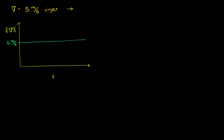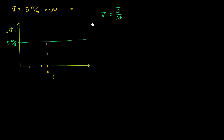My question to you is: how far does this thing travel after 5 seconds? So after 5 seconds — 1, 2, 3, 4, 5 seconds right over here — how far did this thing travel? We could think about it two ways. We know that velocity is equal to displacement over change in time, and displacement is just change in position over change in time. Or another way to think about it, if you multiply both sides by change in time, you get velocity times change in time is equal to displacement.